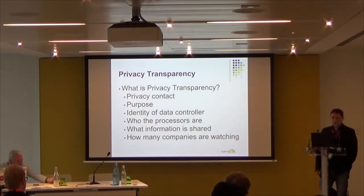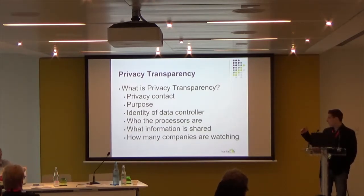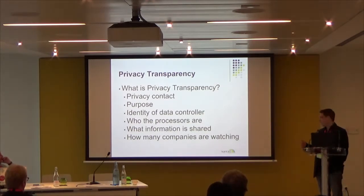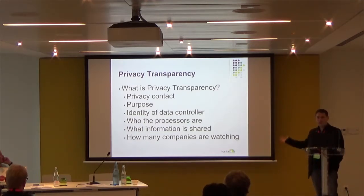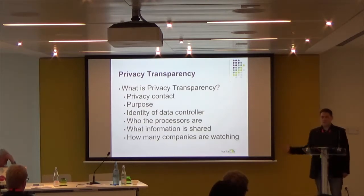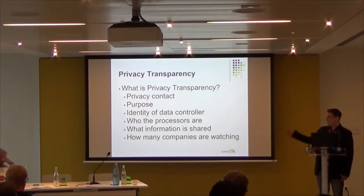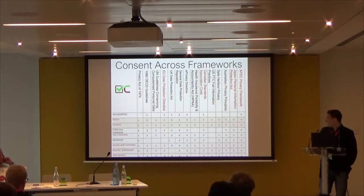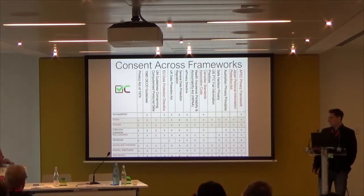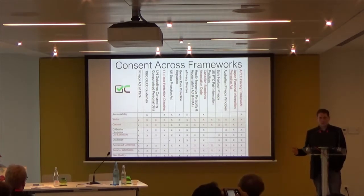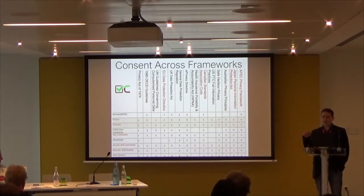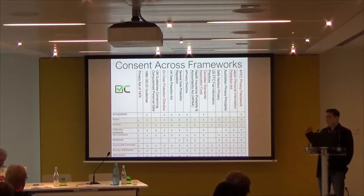What do I mean by privacy transparency? Specifically: privacy contact information, the purpose for sharing personal information, the identity of the data controller, who the processors are, and what information is shared. This stuff is really hard to get, even though it's been part of the laws for a really long time. The 1998 Data Protection Act in the UK and the EU directive say you have to have all this information, but trying to actually go get that information is very difficult.